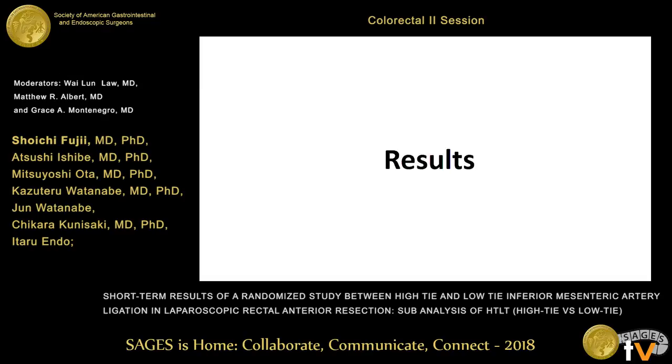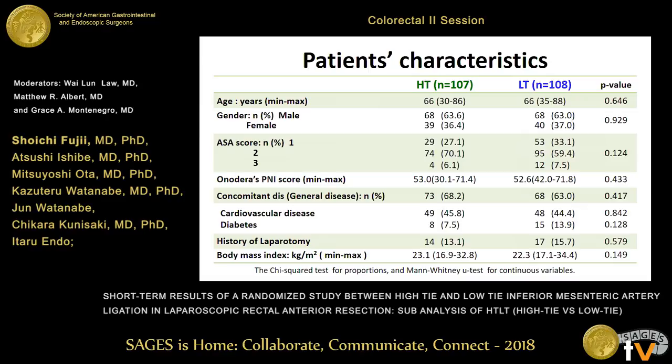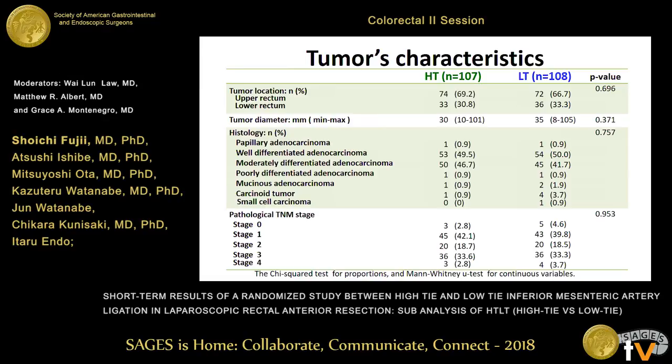From 2006, 331 patients were registered over six years. 324 patients were analyzed for the HTLT study after excluding procedure changes. 109 patients underwent open surgery. Therefore, 107 patients for high-tie and 108 patients for low-tie were analyzed in laparoscopic surgery. There were no significant differences in patient characteristics and tumor characteristics.